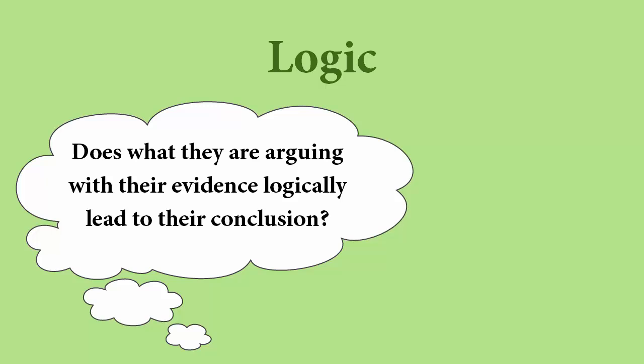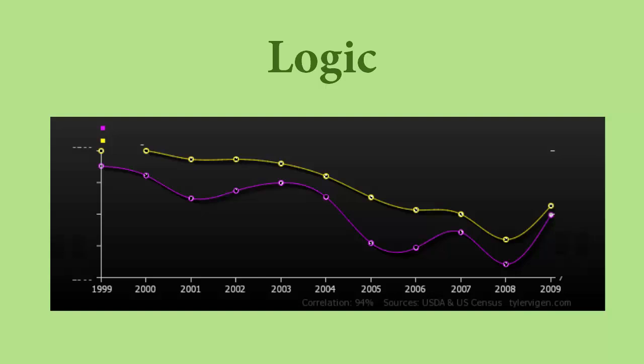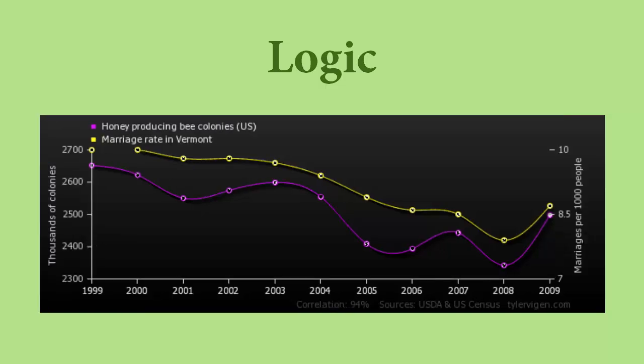You'll want to make sure that there aren't large holes in the logic of the arguments being used by your source. This is true for things like charts and graphs too. From this chart, it looks like the two trends being graphed might have something in common with each other. But if I reveal that the numbers being graphed are actually honey-producing bee colonies in the United States and Vermont marriage rates, this evidence isn't enough. I'll still have to come up with a logical argument as to how these two things are related.